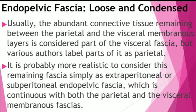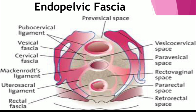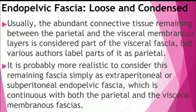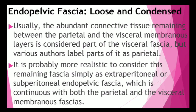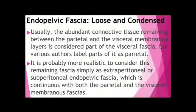Now I need to talk about the endopelvic fascia, which has loose and condensed layers. Here is an illustration — a cross section through the pelvis — showing the bladder anteriorly, then the uterus, and posteriorly a section through the rectum, with the endopelvic fascia surrounding the viscera. The endopelvic fascia is an abundant connective tissue found between the parietal and visceral membranous layers. It is more appropriate to consider this fascia simply as extraperitoneal or subperitoneal pelvic fascia, and it is continuous with both the parietal and visceral membranous fascia.